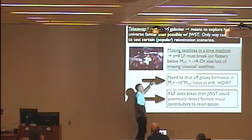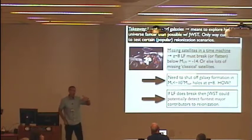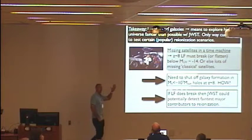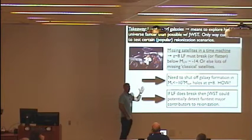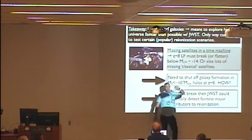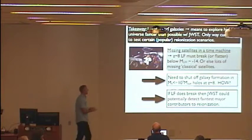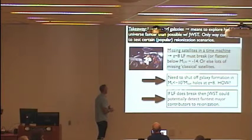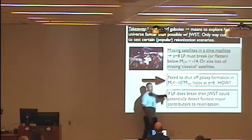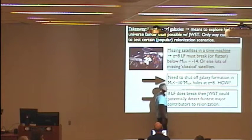For example, you know, I've talked about this kind of missing satellites in a time machine thing, where it's hard to understand how the Z of 8 luminosity function can continue to rise as steeply as we're seeing, all the way down to luminosities that might be required to maintain reionization. And then, in fact, it may have to break at something like minus 14 or something in order for local counts to be resolved, or to be understood. So, of course, then what you need to do is you have to shut off galaxy formation in these sort of halos that are well above the atomic cooling limit. I talked about different ways why that might happen fairly naturally.